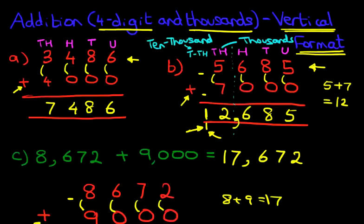And that is addition of four-digit numbers and thousands using the vertical format.